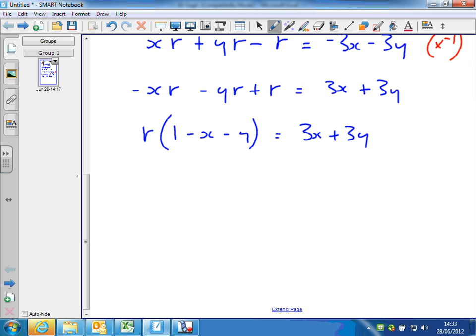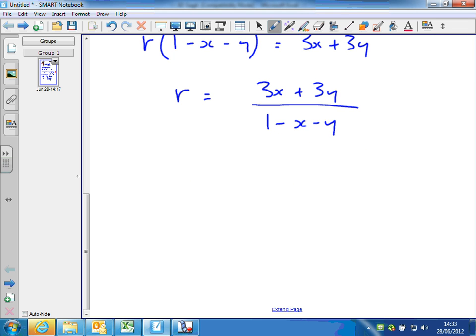Now I'm going to divide both sides by that term in the bracket on the left hand side. So r equals 3x plus 3y over 1 minus x minus y. And finally, I could factorize the top, taking a 3 outside the bracket, leaving x plus y inside, and then 1 minus x minus y underneath, which I guess is the answer in the text.